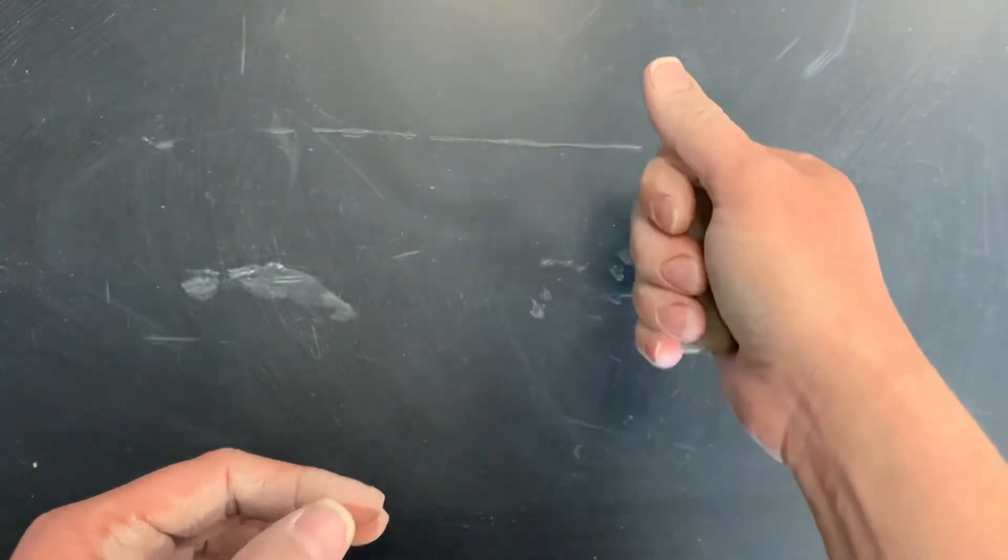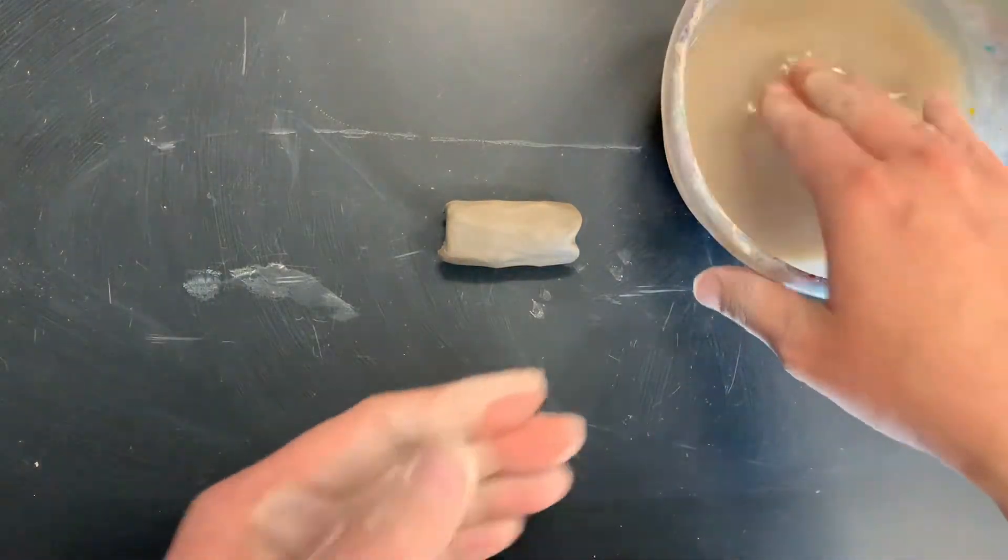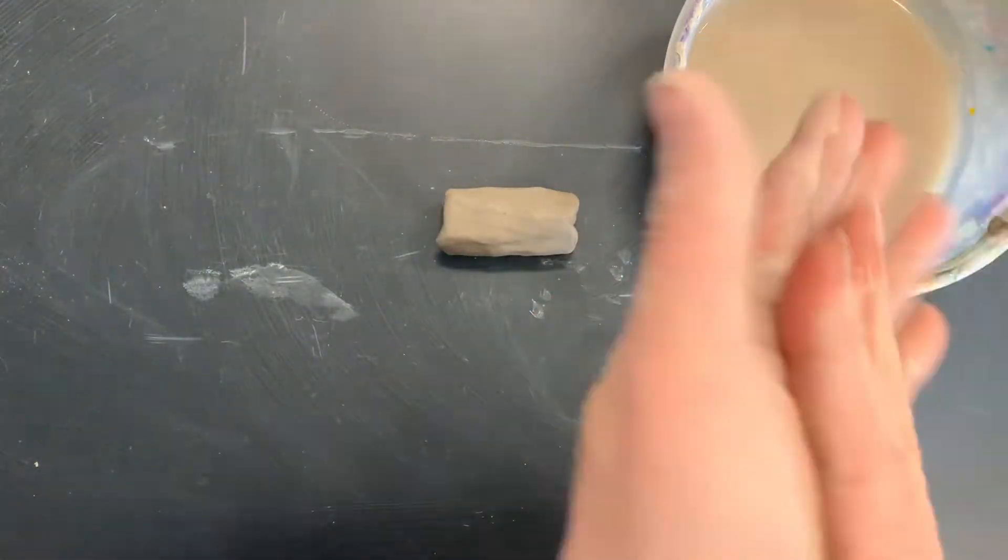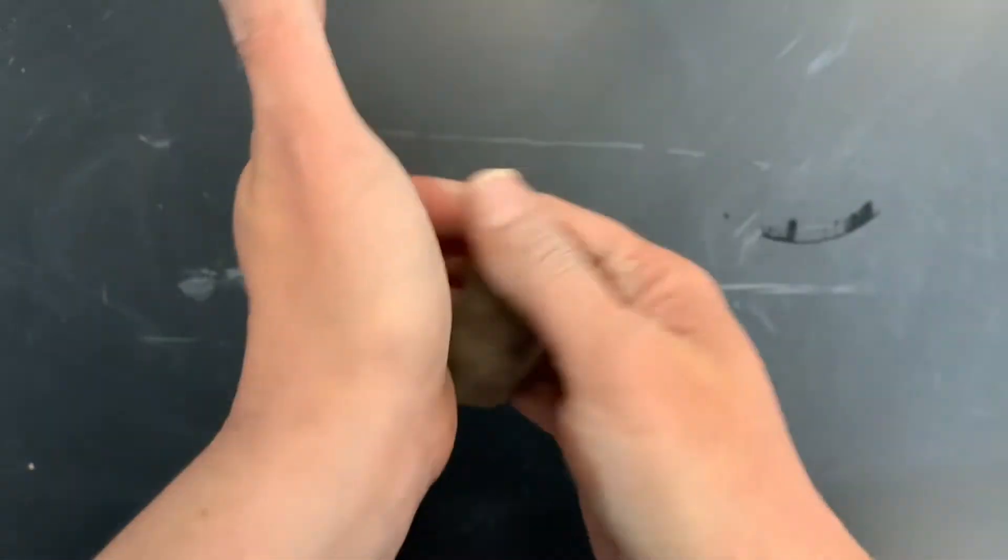If your hands feel dry or if the clay isn't sticking to your hands, take a little bit of your slip or water and just put it on your hands. Next, we're going to roll a little bit in our hands. We want to even it out.